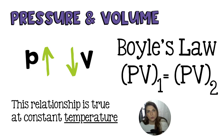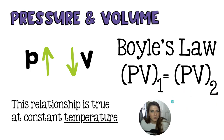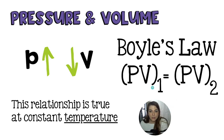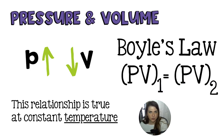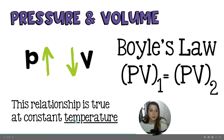Some teachers like a 1 and a 2, and other people like a final and an initial as the subscript label. A lot of people don't like 1 and 2 in the equation because they think they may have to do a calculation with that number — but that subscript is just a describing term for the situation. The pressure times the volume before equals the pressure times the volume after, and this relationship holds at a constant temperature.